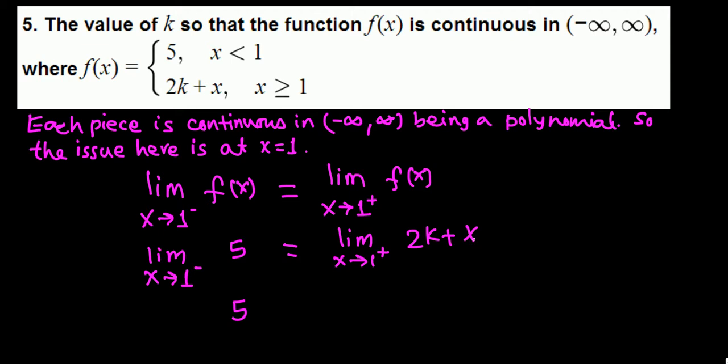So 5 equals 2k plus 1. We have a linear equation in terms of k. Subtract 1 from both sides: 4 equals 2k. Divide by 2, you get k equals 2.